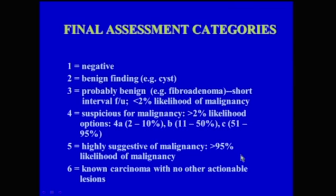After evaluating a mass, we need to assess it with a final BI-RADS category. BI-RADS 1 is negative. BI-RADS 2 is benign, such as a cyst or fibroadenoma. BI-RADS 3 is probably benign — including fibroadenomas — with short interval follow-up, for lesions with less than 2% likelihood of malignancy. BI-RADS 4 is suspicious for malignancy, now divided into: 4A (2–10% malignancy risk), 4B (11–50% risk), or 4C (51–95% risk). BI-RADS 5 is highly suspicious for malignancy with greater than 95% likelihood. BI-RADS 6 is for a patient with already-known carcinoma being evaluated for another lesion.